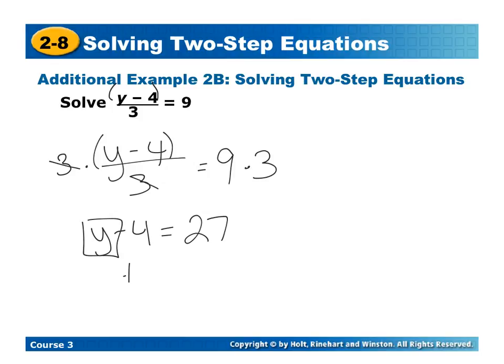Now I have y minus 4 is equal to 27. Since it's y minus 4, I'm going to go ahead and add 4 to both sides because I'm doing the opposite. And y is going to equal 31.